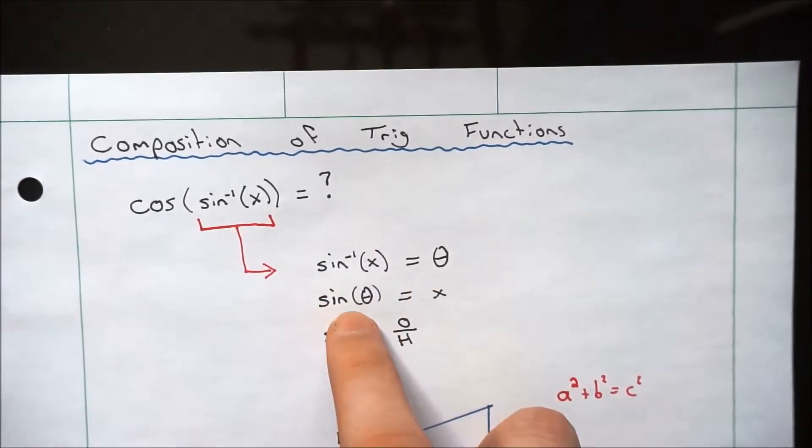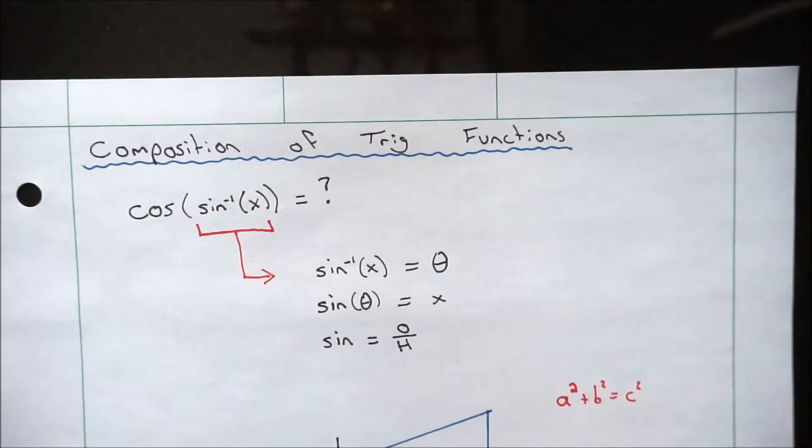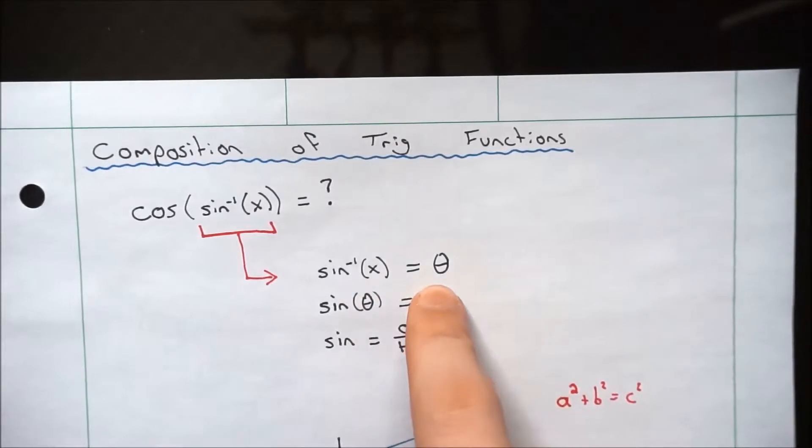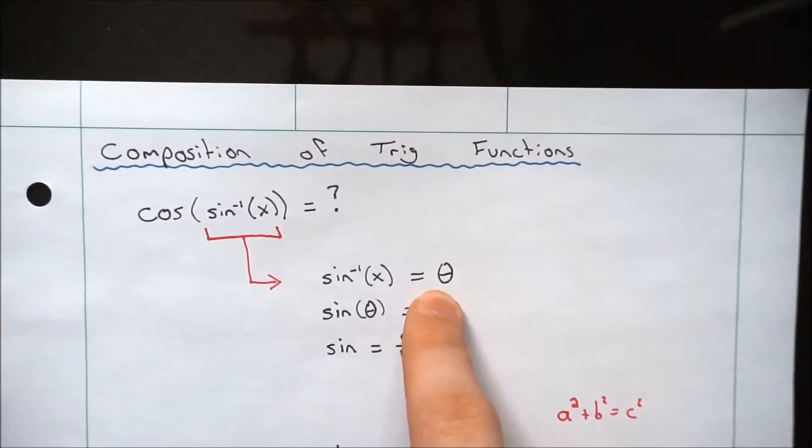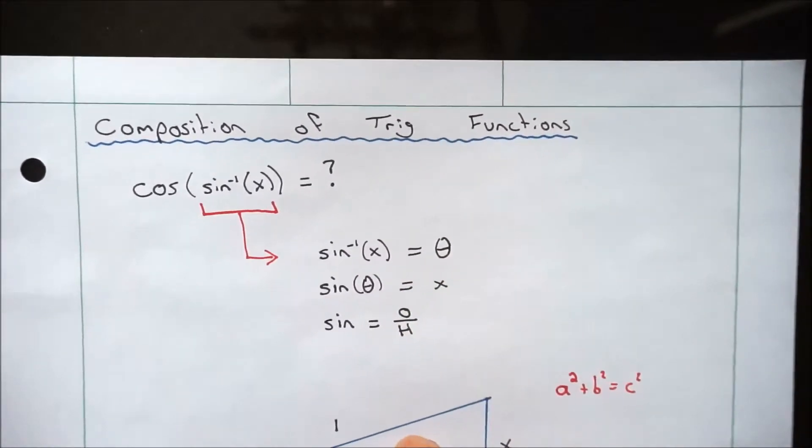Same way the other way around, you take the sine of an angle, and it gives you a ratio of the sides, which for sine is opposite over hypotenuse. So here we've taken arc sine of x, and we just called it theta. This is just some angle. You don't have to call it theta. You can call it anything you like. Here we're going to call it theta.